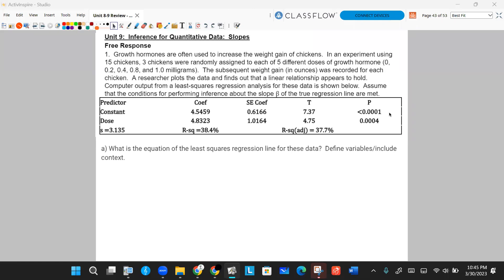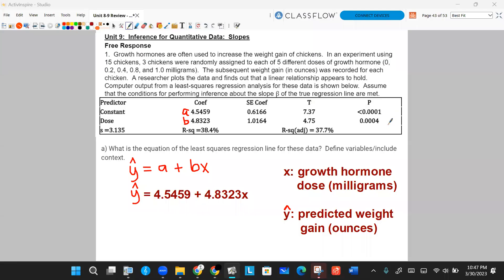Part A, what is the equation of the least squares regression line for these data? You have your generic formula. Y hat equals A plus BX. You have to figure out what your A and your B are from your table. And A will always be the number, the first number under coefficient that's by the constant. B is going to be the slope that's going to be by the dose. So we're going to write those in. You can also write the name of the things that Y and X represent. In this case here, there's a little bit more words here. So I'm going to just define the variables to the right. In this case, X is going to be your growth hormone dose in milligrams. And Y hat is predicted weight gain in ounces.